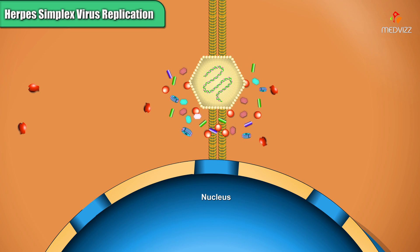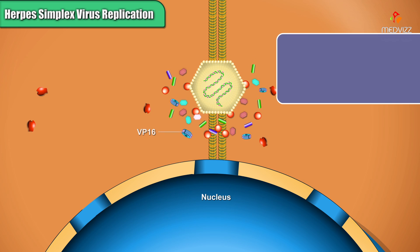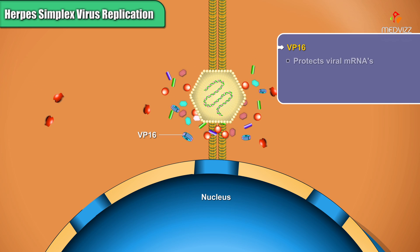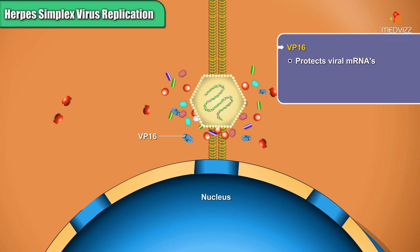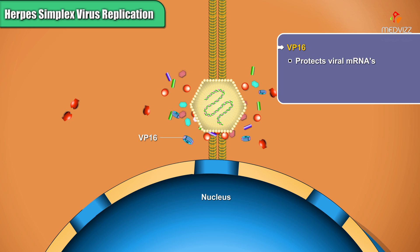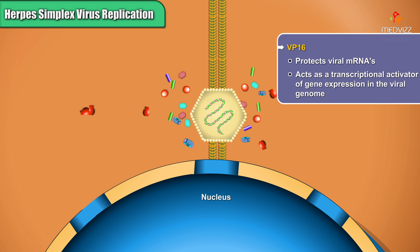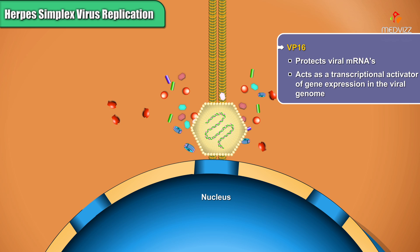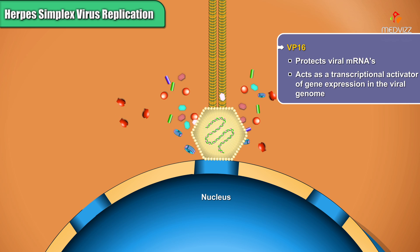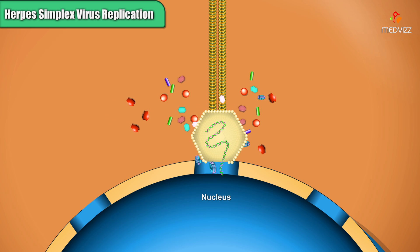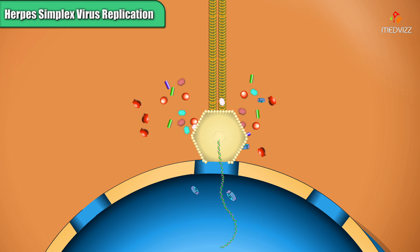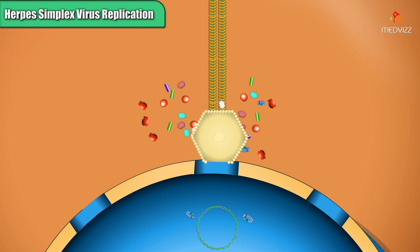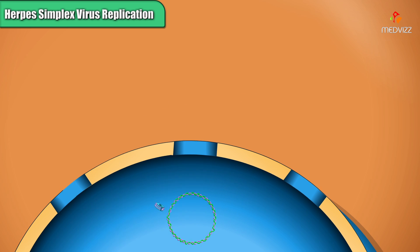Another tegument protein called VP16 ultimately protects viral mRNAs. It also acts as a transcriptional activator of gene expression in the viral genome. At a nuclear pore, the herpes chromosome enters the nucleus. The DNA then circularizes to form a plasmid-like intermediate.